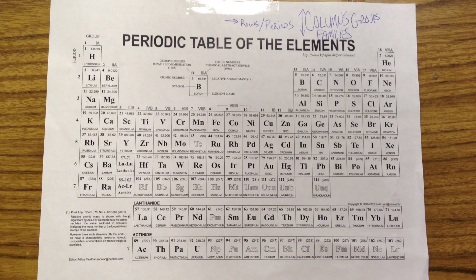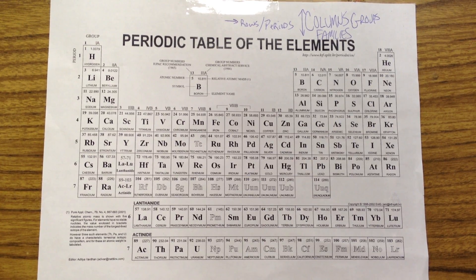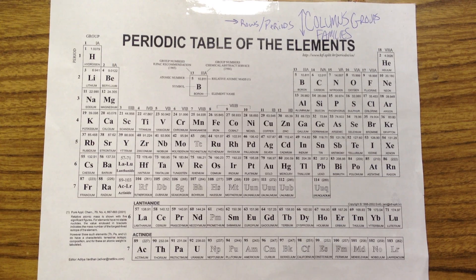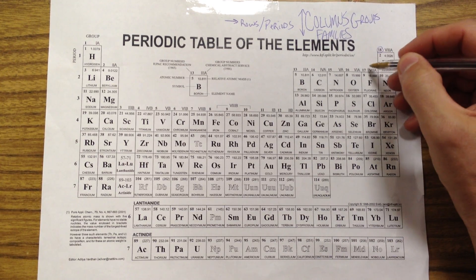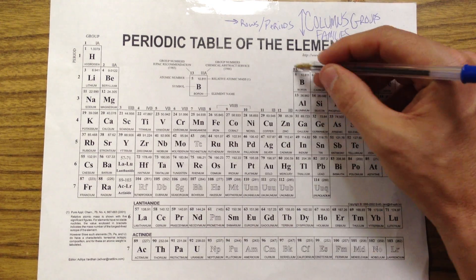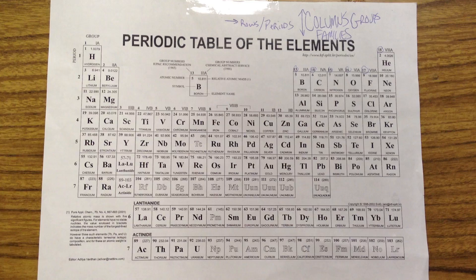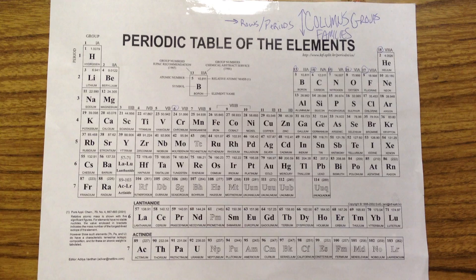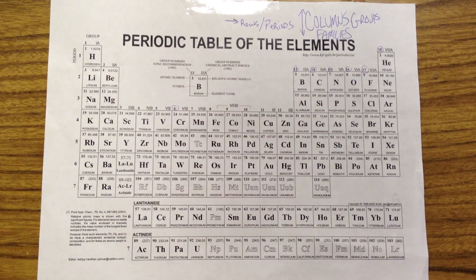The numbers of the columns also, there's a couple of different ways to number them. Just to keep things clear, when I refer to them, I'll just talk about the number on the left. We won't deal with the Roman numeral. So if I talk about group 6, I'm talking about the chromium group. If I talk about group 2, that's the beryllium group, etc.